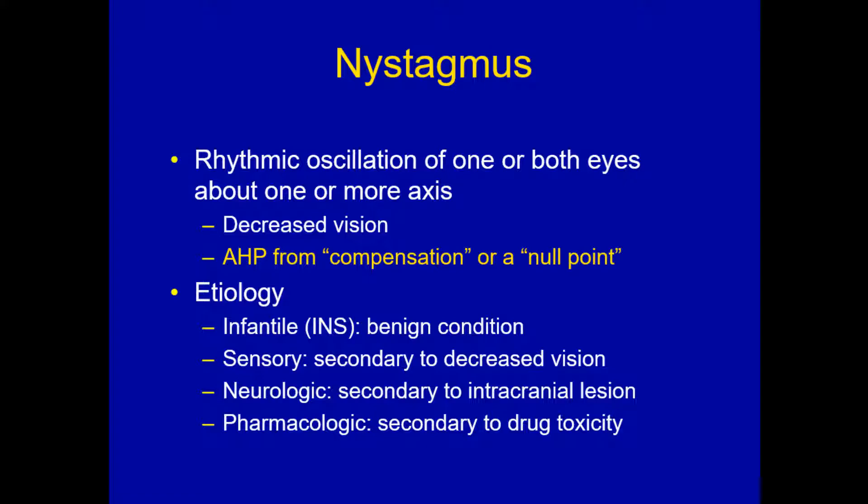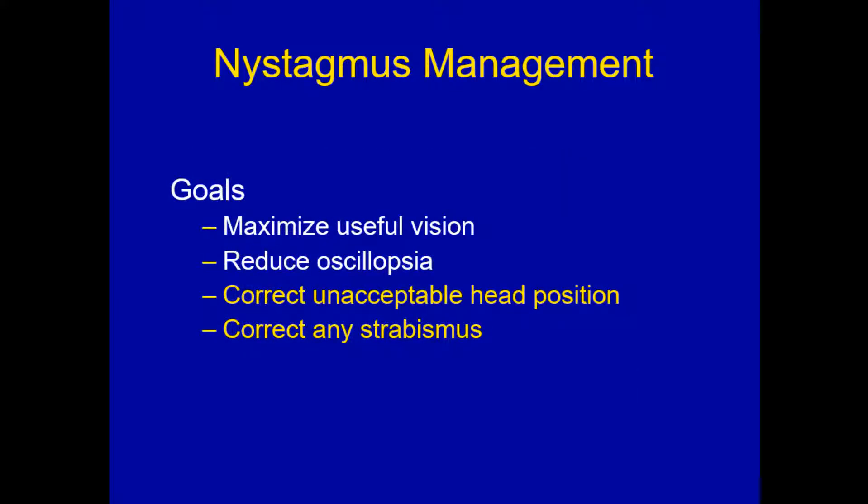Most of the useful treatments, I think, are to correct for null point nystagmus. The treatments described for vision improvement are relatively ineffective, and if they are effective, it's for a relatively short time. The etiologies are infantile nystagmus syndrome, which is a benign condition, sensory, neurologic, or pharmacologic. The goals of nystagmus management are to maximize useful vision, reduce oscillopsia when present, correct unacceptable head position, and correct any strabismus.